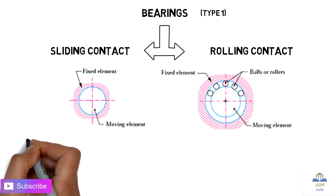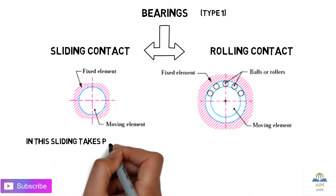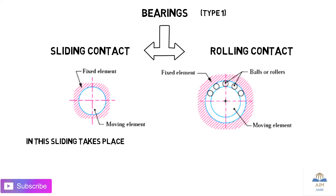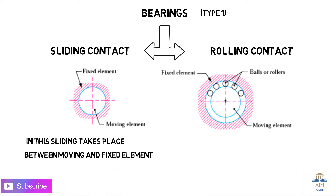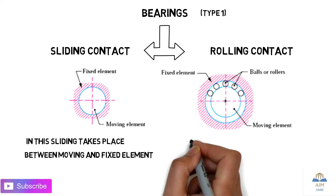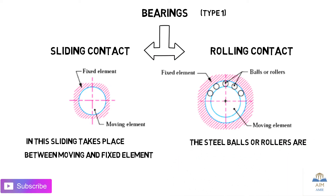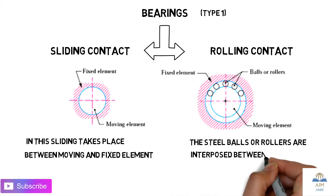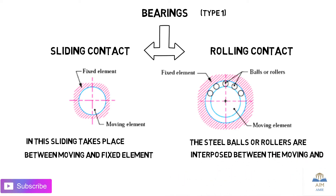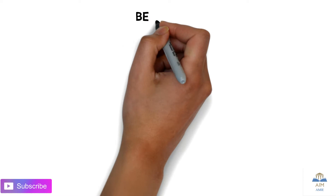As shown in this image, in the case of sliding contact, sliding takes place between the moving and the fixed element. In the case of rolling contact, steel balls or rollers are interposed between the moving and the fixed element. This is the main difference between sliding and rolling contact bearings.